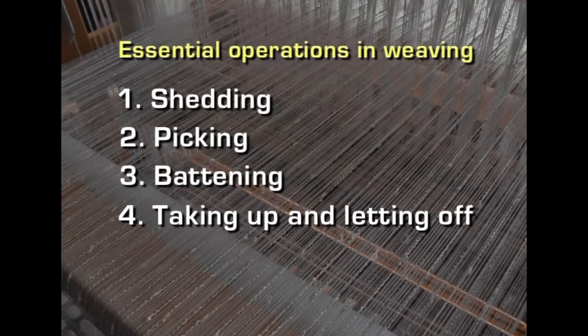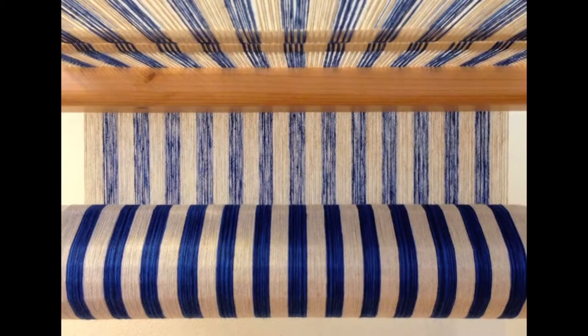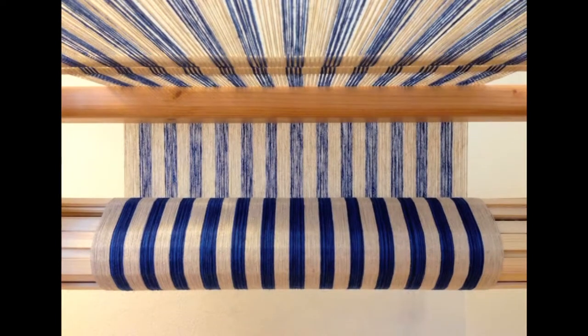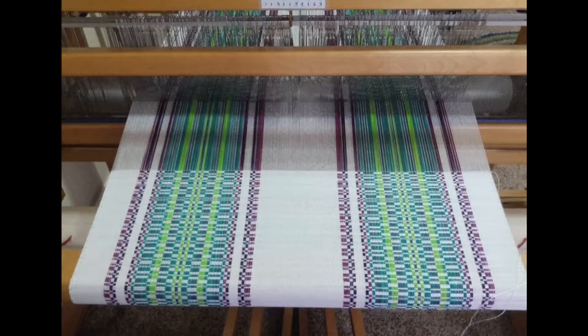The next operation is taking up and letting off. The fabric which is already made is taken up and wound around the cloth beam, and the warp beam releases the warp yarns to maintain a proper distance and tension between the two beams. This proper tension facilitates picking. All these operations are done in sequence and thus the fabric is made. The length of the fabric depends upon the length of the yarn that is present on the warp beam.